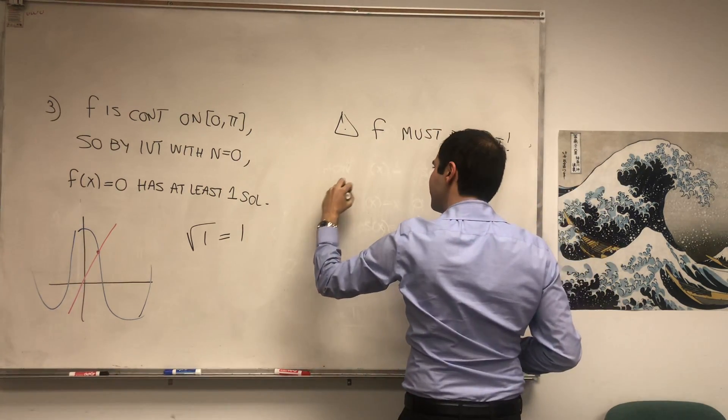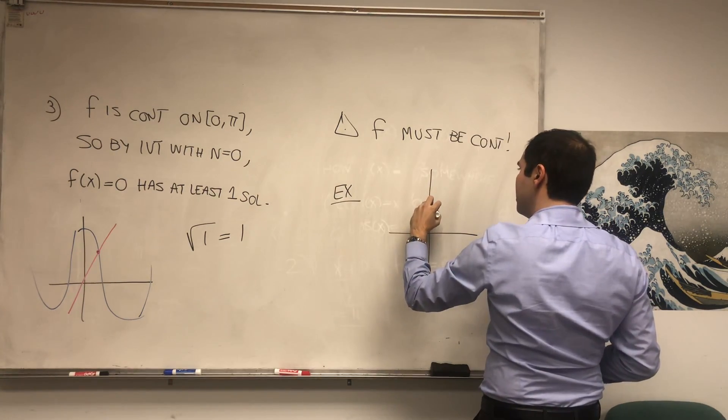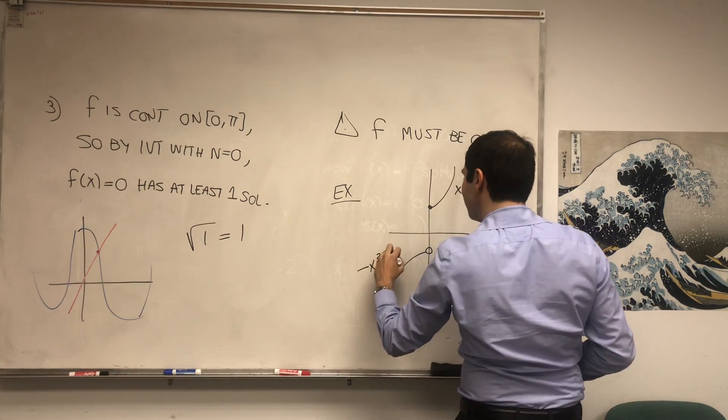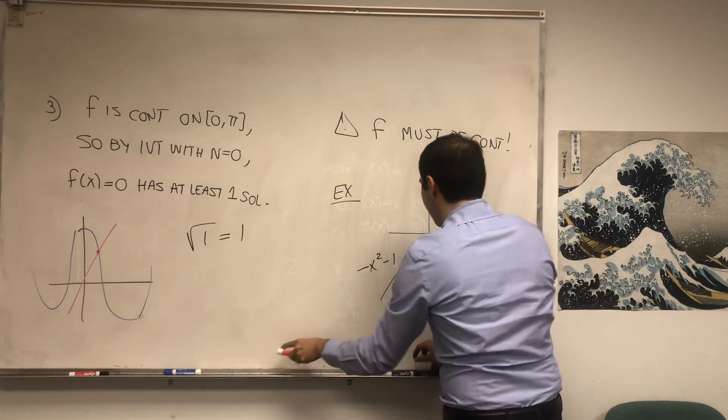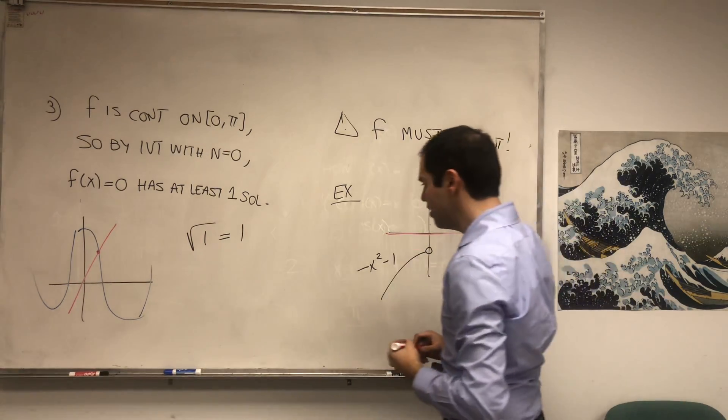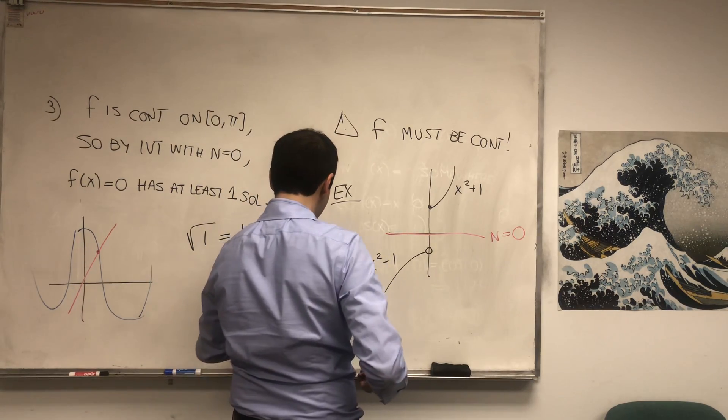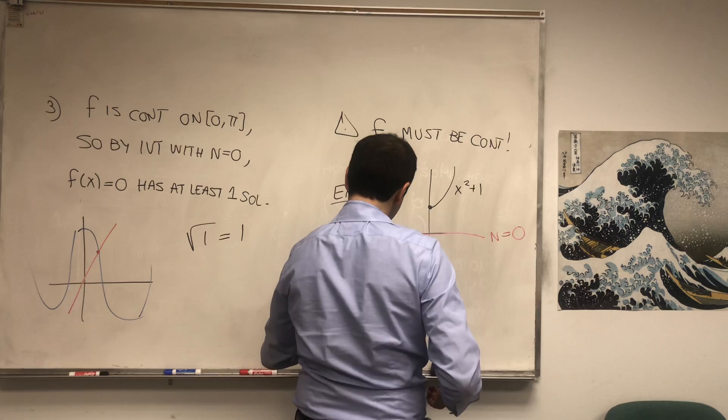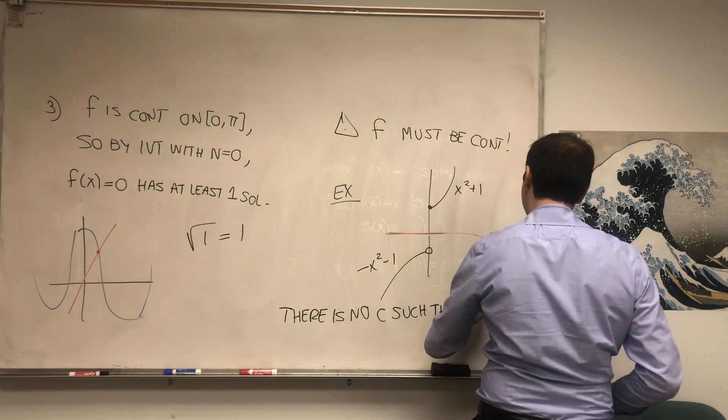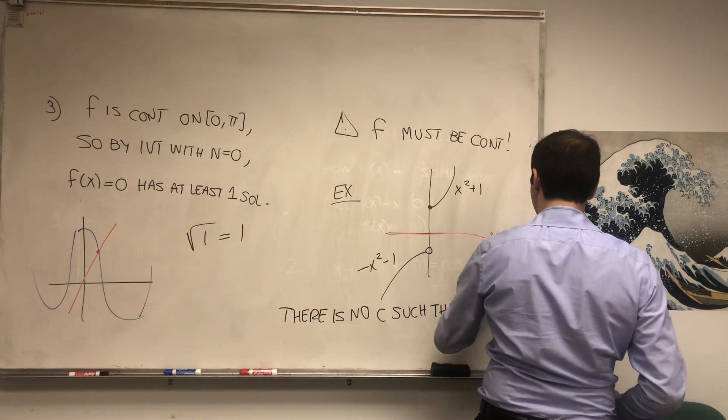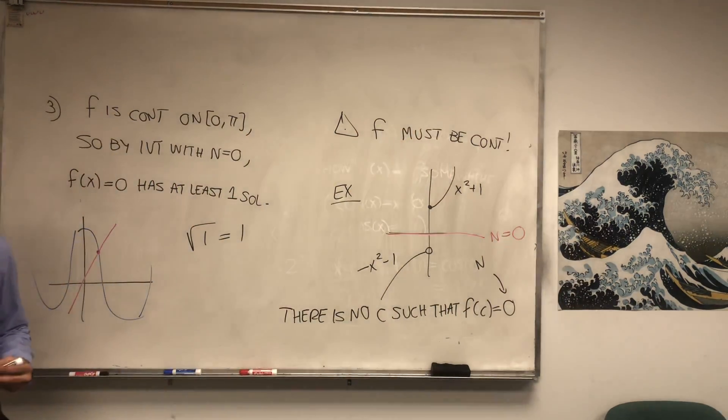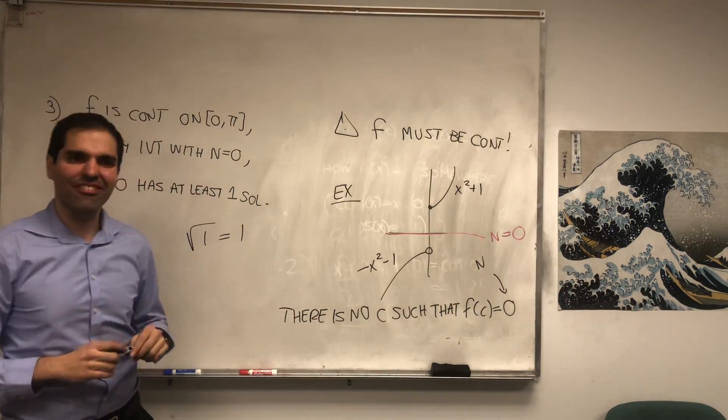Because here's an example. What if f(x) is x^2 + 1 here, and -x^2 - 1 here? Question: Is there some value where f is 0? Well, the answer is no. So there is no c such that f(c) equals 0, which here is n. And so because f has a jump here, it doesn't really attain all its values. So it's very important that f must have no jump.